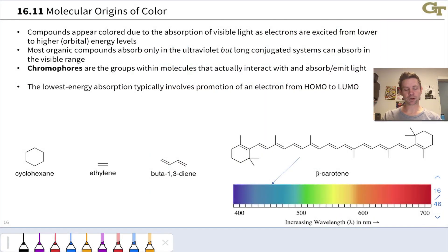From introductory chemistry, we know that compounds appear colored due to the absorption of light, and the absorption of light involves excitation of electrons from lower to higher energy orbitals, at least in the ultraviolet and visible range.